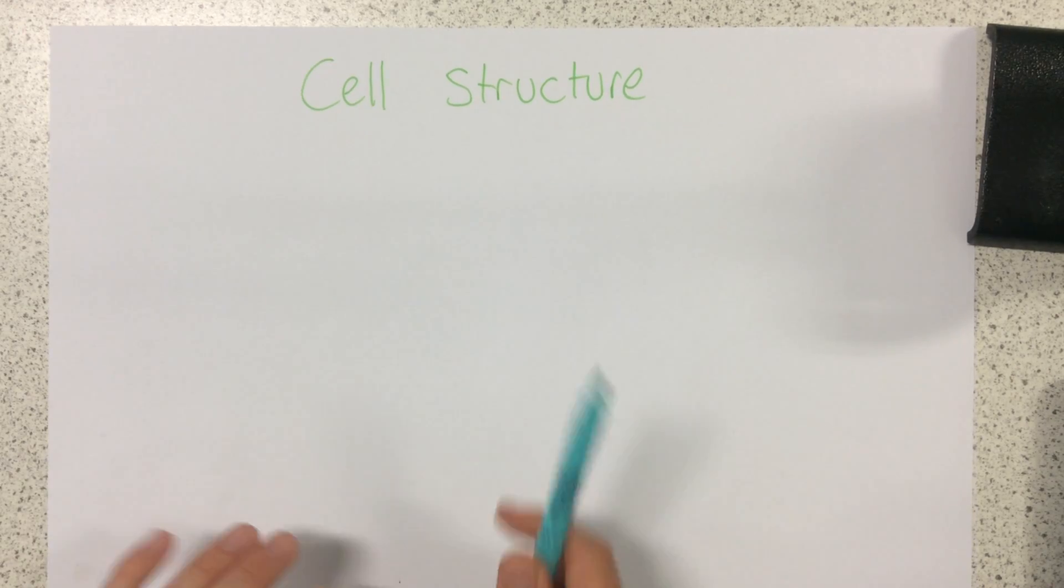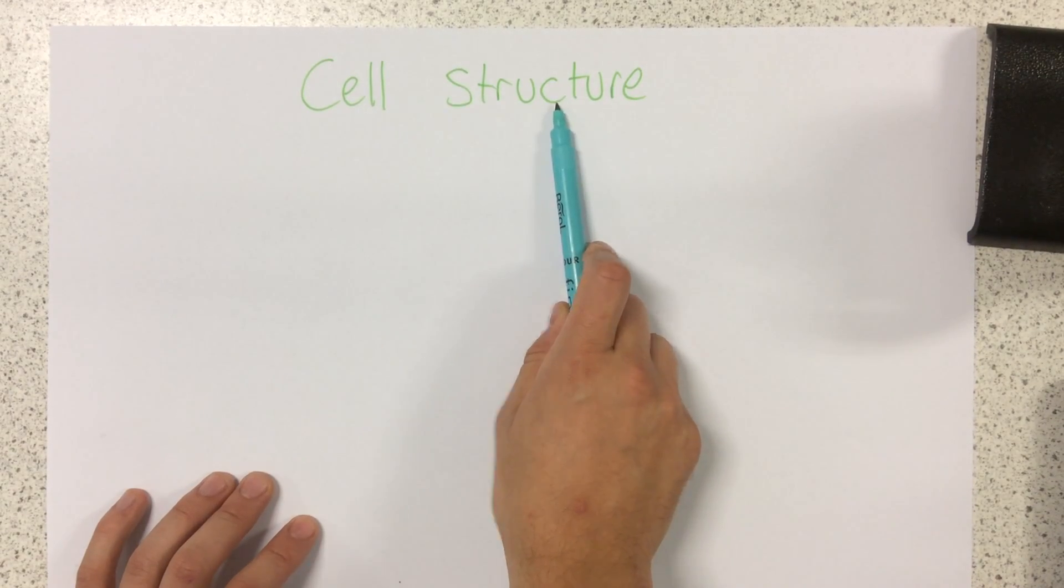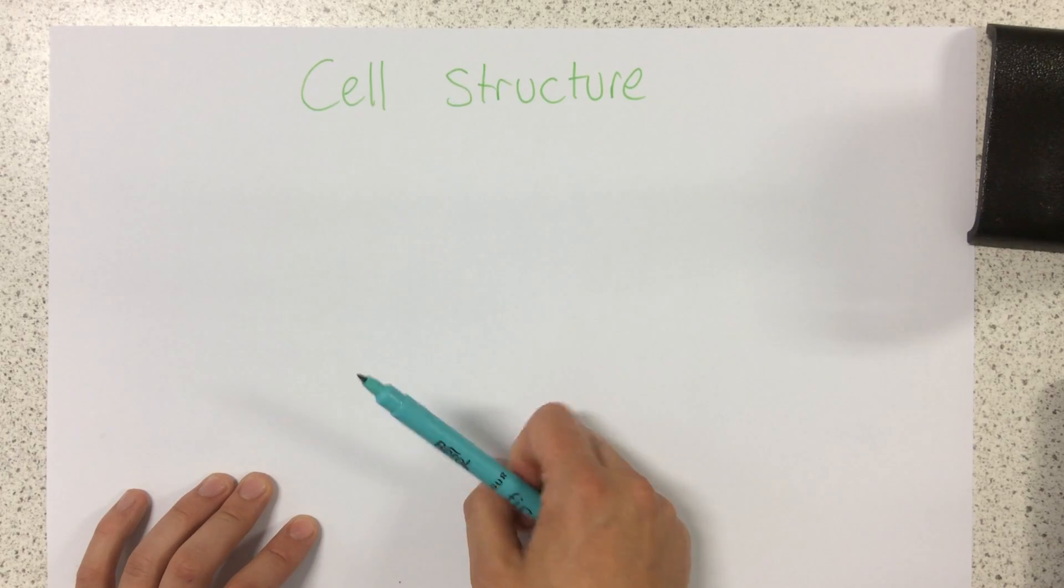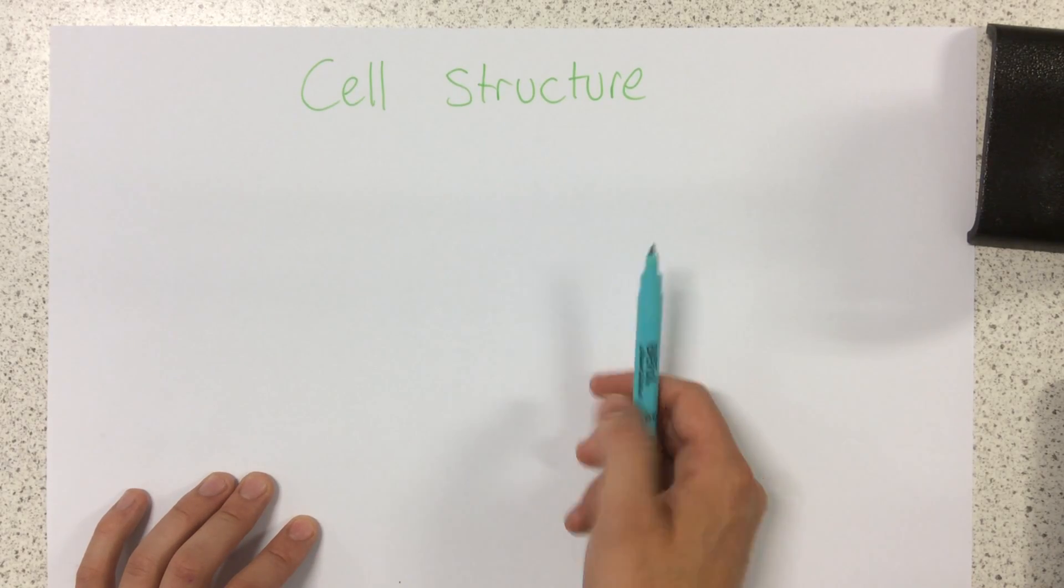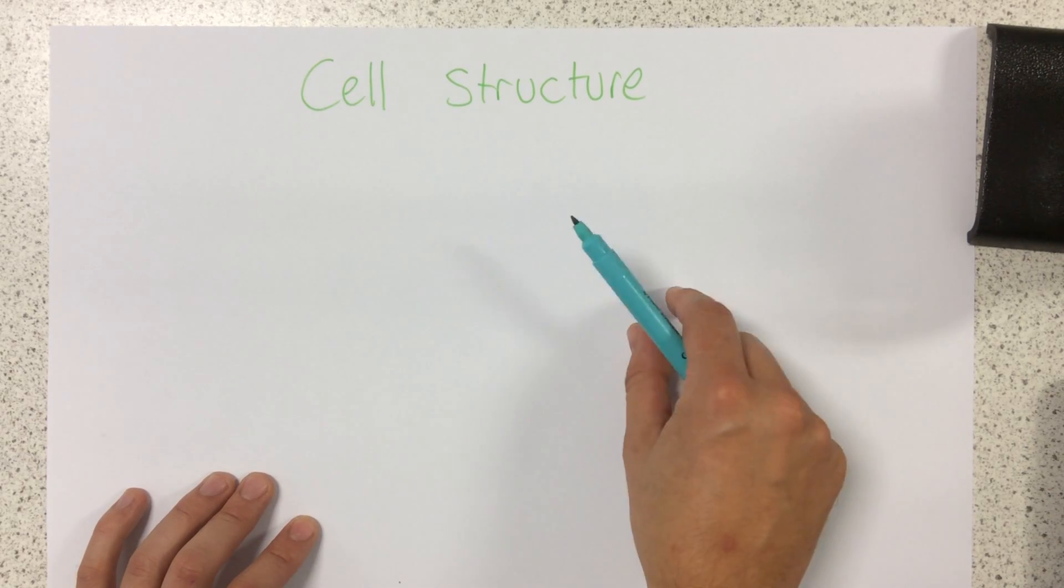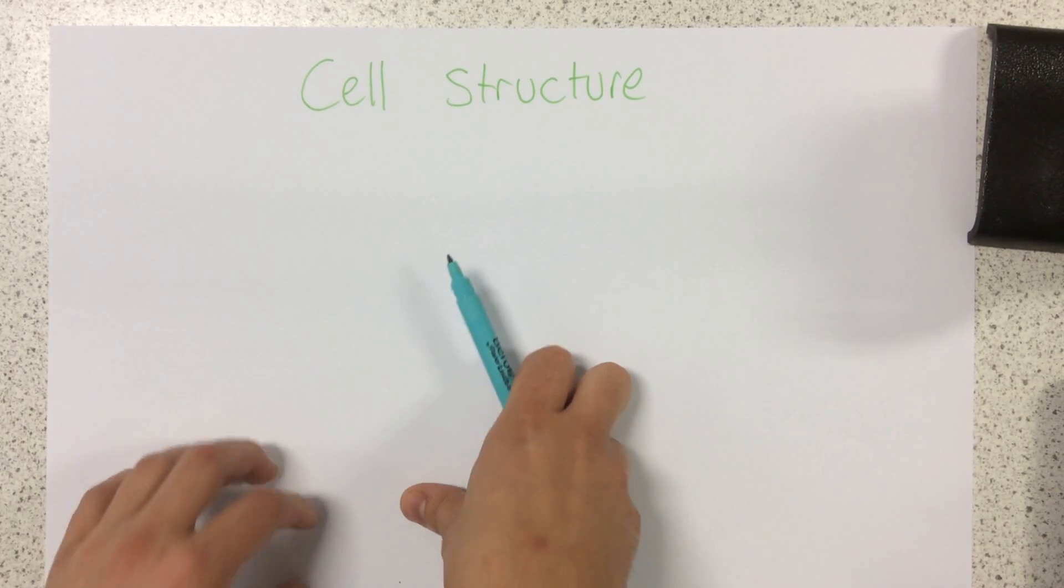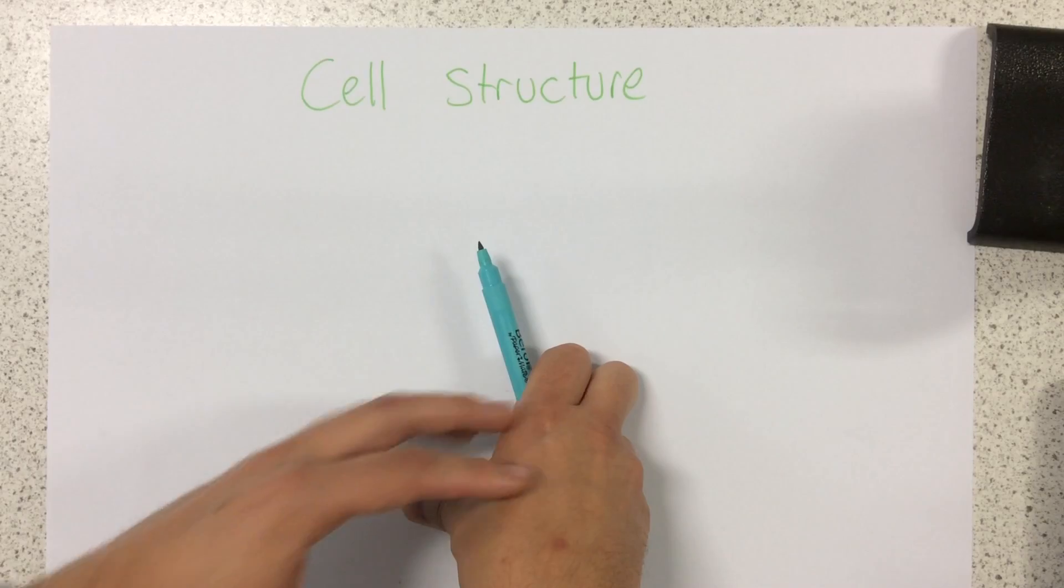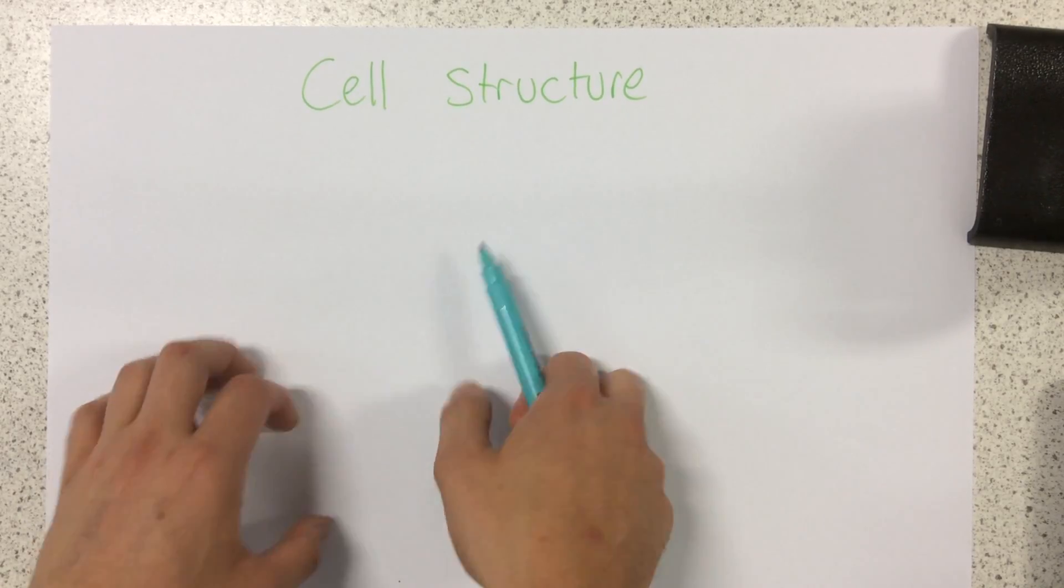Okay, I'm going to talk to you about cell structure. So cells make up all living things. Some organisms like bacteria are just made of one cell, whereas animals and plants are multicellular, made of many cells. They're tiny building blocks of all living things.